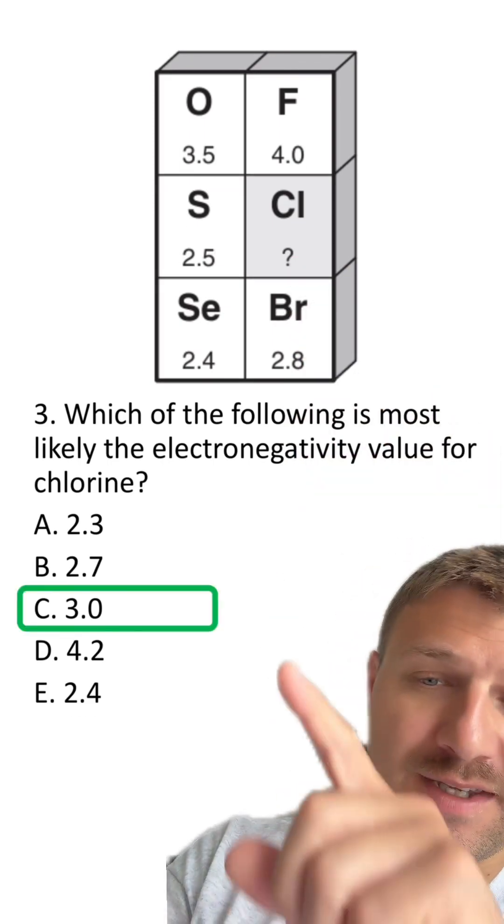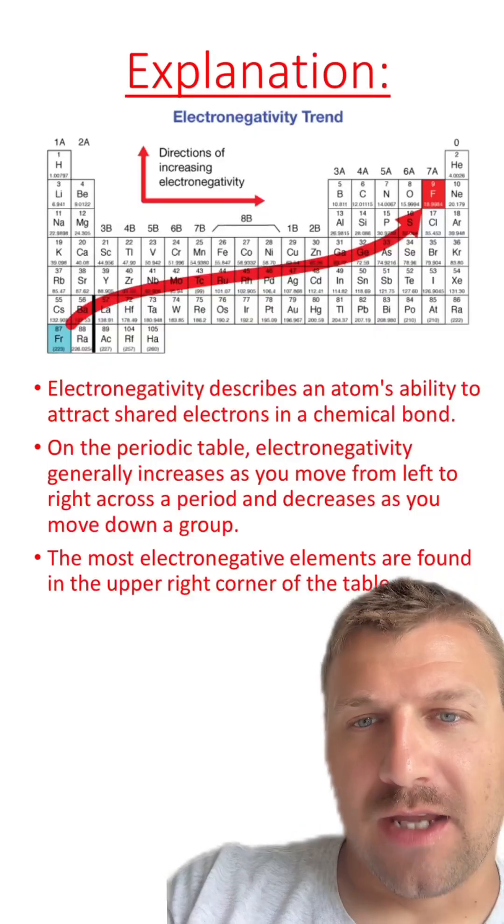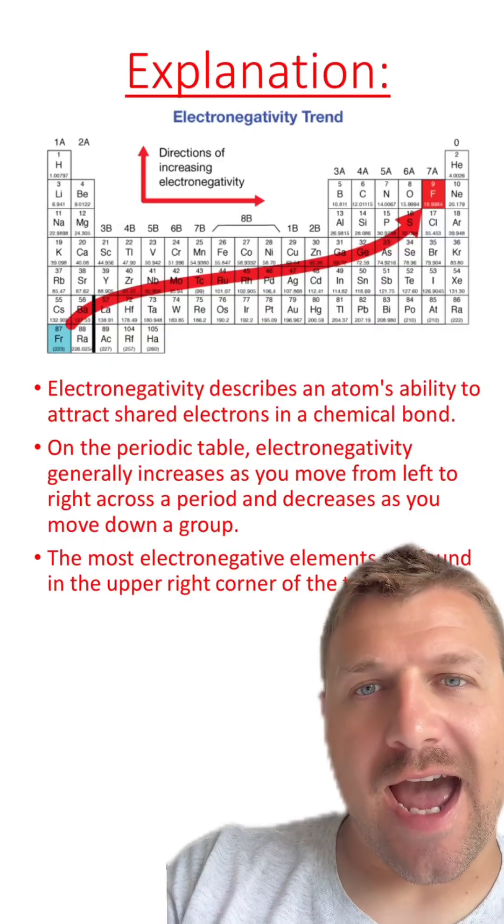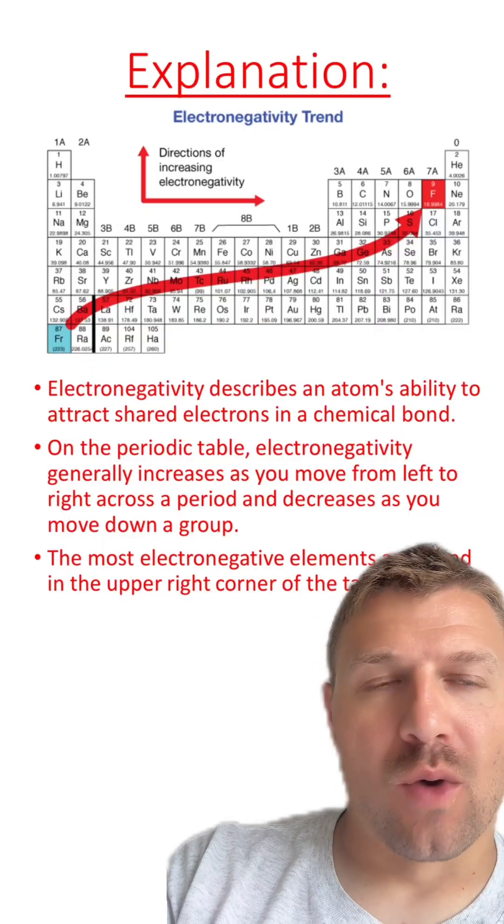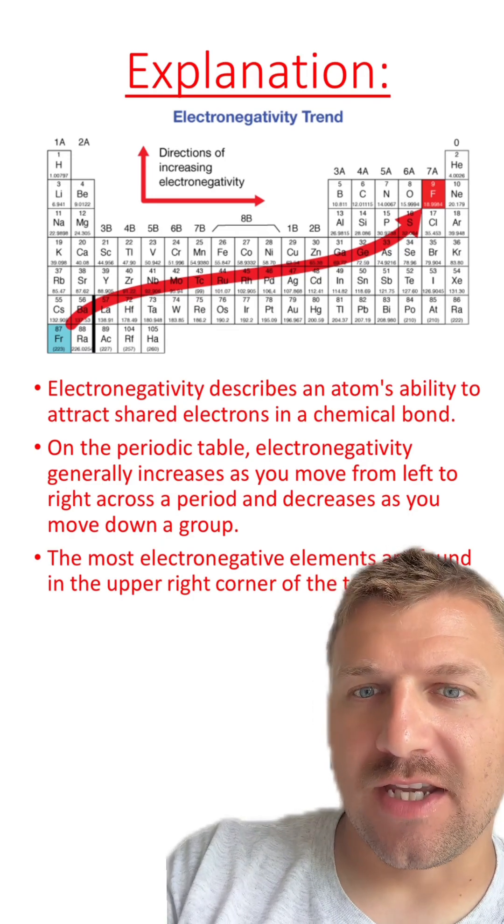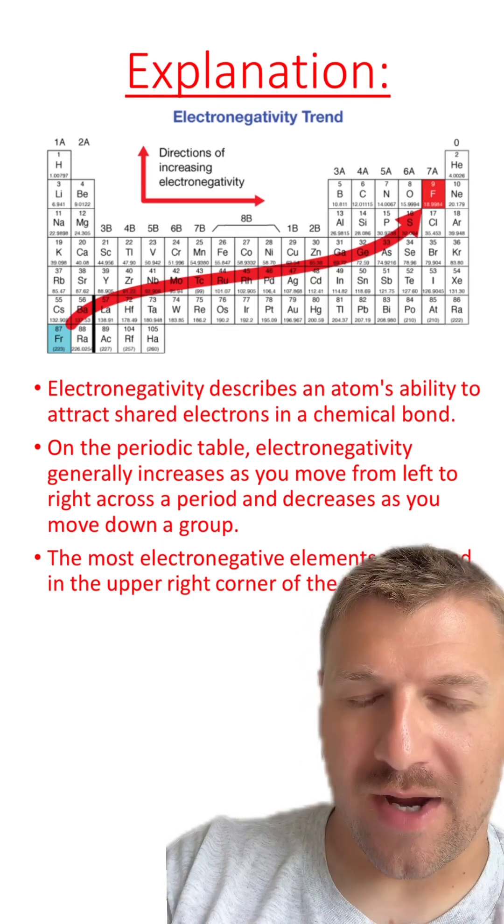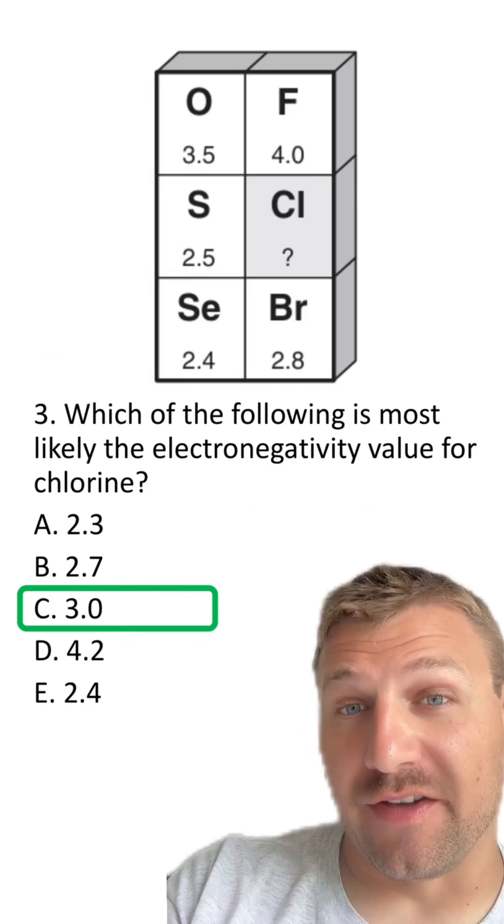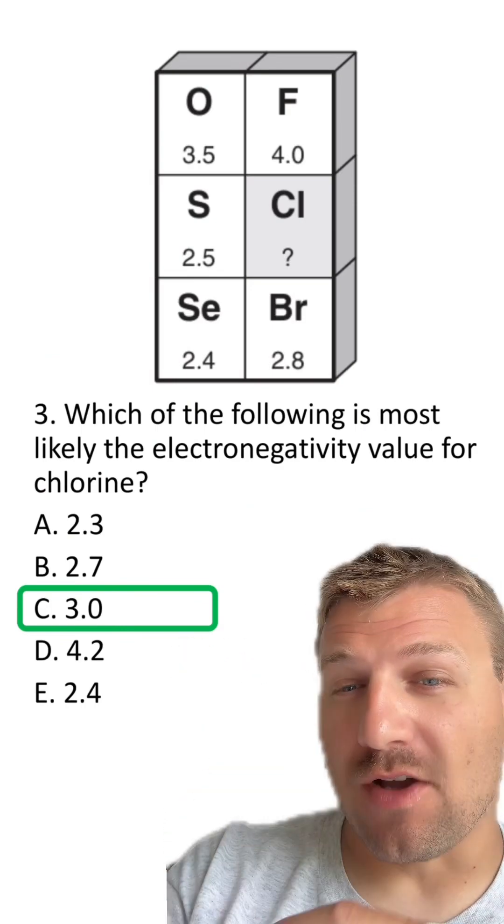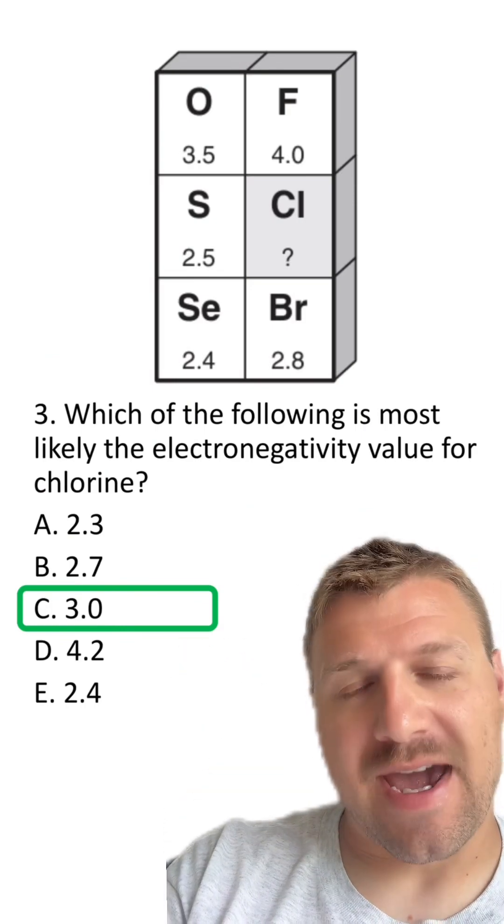The answer here is C, 3.0. Electronegativity basically looks at how much an atom wants an electron. On a periodic table, electronegativity generally increases up and to the right. So in this case, the only number that really fits would be three, because all the other numbers don't really follow that pattern.